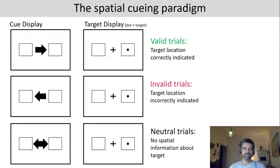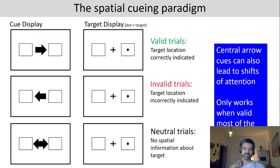The spatial cueing paradigm also works with central cues. Instead of flashing the periphery, you can present arrows in the center and participants attend the right or left hemifield accordingly. Neutral trials provide no specific spatial information. Interestingly, this only works when the arrows are valid most of the time, suggesting this is not automatic — it is willfully happening. So there are different kinds of attention shifts: automatically triggered ones and voluntarily triggered ones.